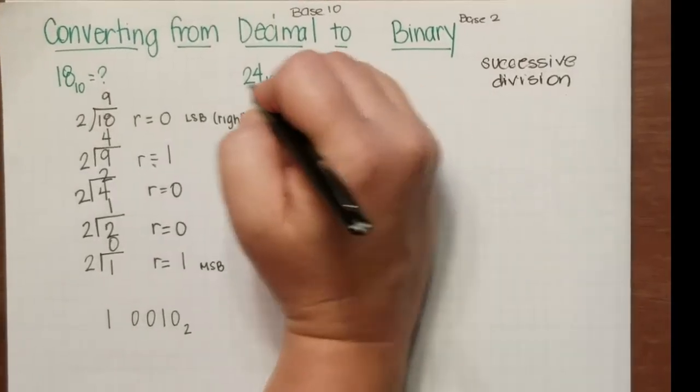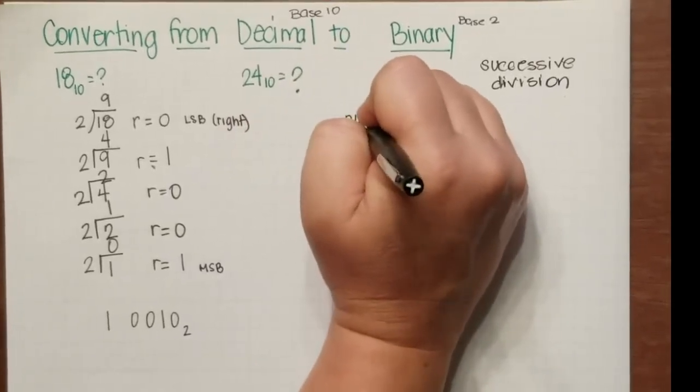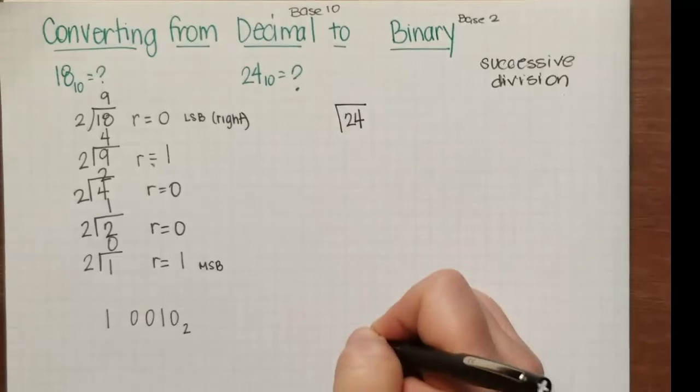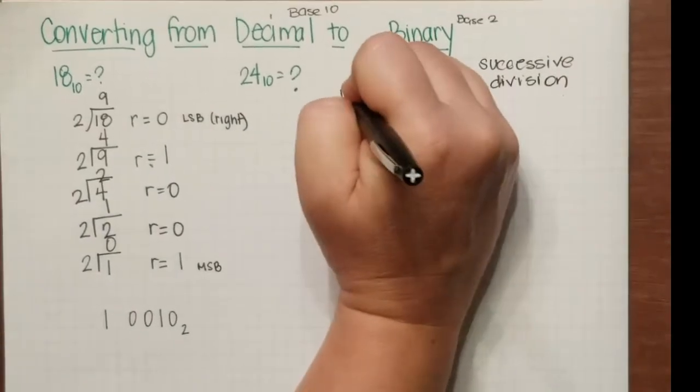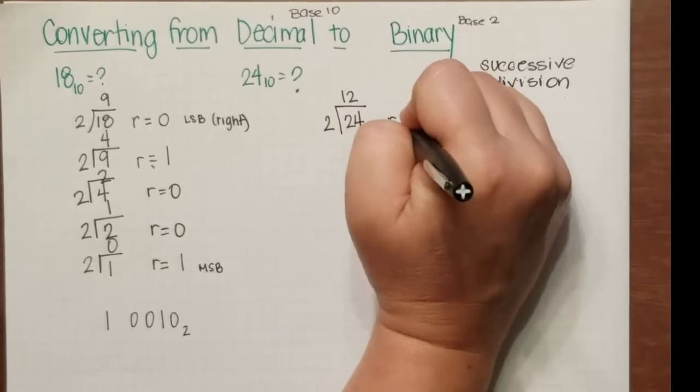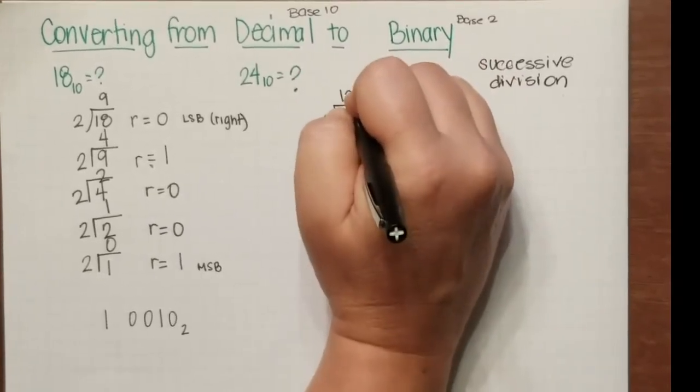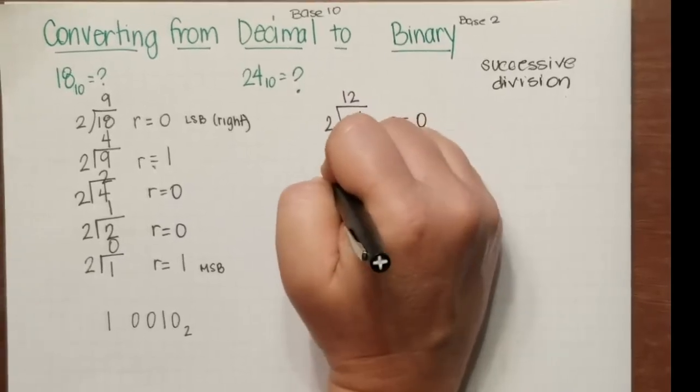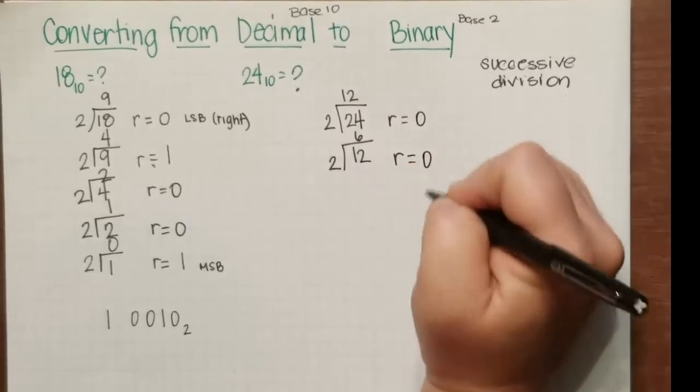So we're going to do it again, this time let's do it for the number 24. We put 24 inside our division sign, divide by 2. It goes in 12 times with a remainder of 0, and so we just repeat the process.